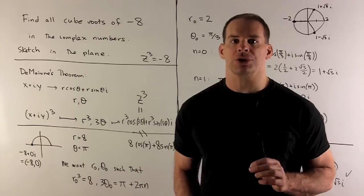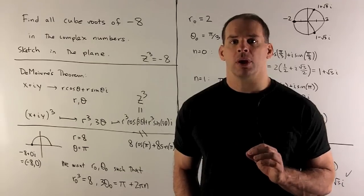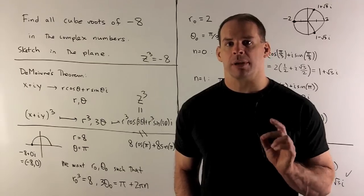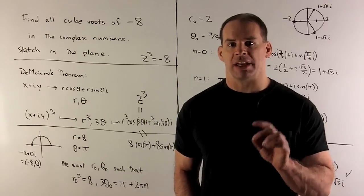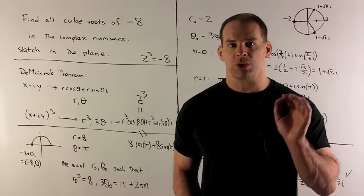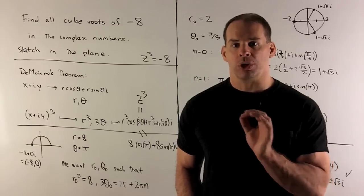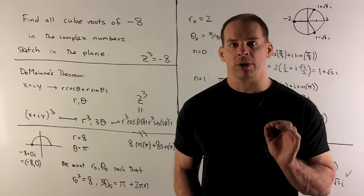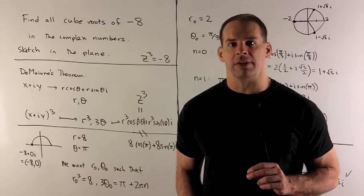First approach: De Moivre's theorem. What De Moivre's theorem gives us is a recipe for taking a complex number and raising it to a power. We could use the binomial theorem, but that would be too much heavy lifting.